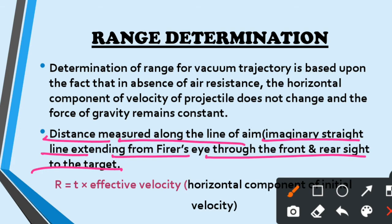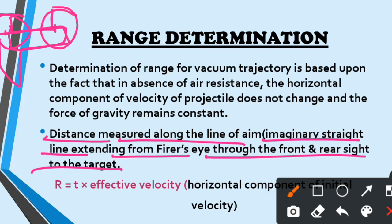जो firer होता है उसका क्या मतलब है — जो individual firing कर रहा है, उसको हम बोलते हैं firer. तो जो आपके firer की eye से target को aim करता है, तो target को aim करने के लिए front and rear sight का वो use करता है. जो आपका firearm होता है उसकी barrel पर आपको दो उभरे हुए से portion देखने को मिलते हैं — पीछे side में rear sight and आगे side में front sight, जिसे muzzle side कहते हैं. इन दोनों sights को use करके target को aim किया जाता है, और जो imaginary line बनती है उसको हम line of aim या line of sight कहते हैं.